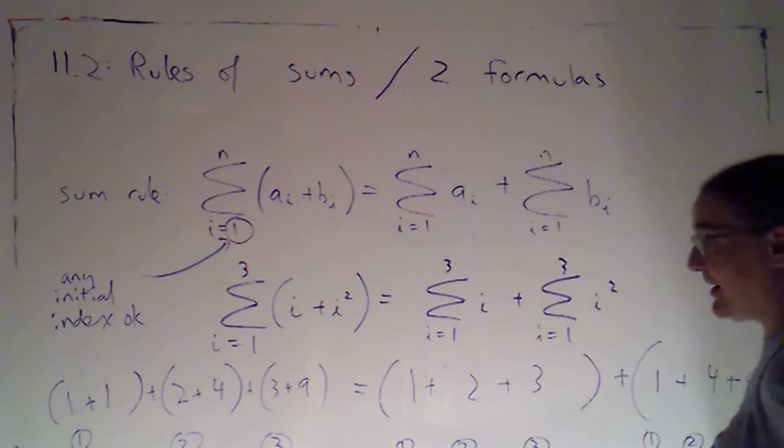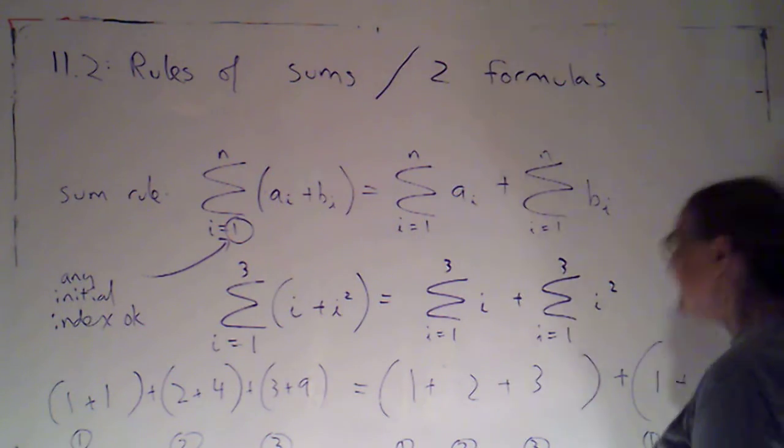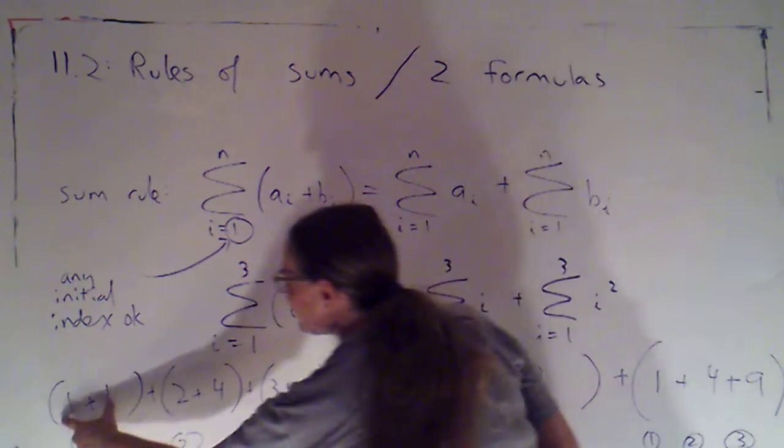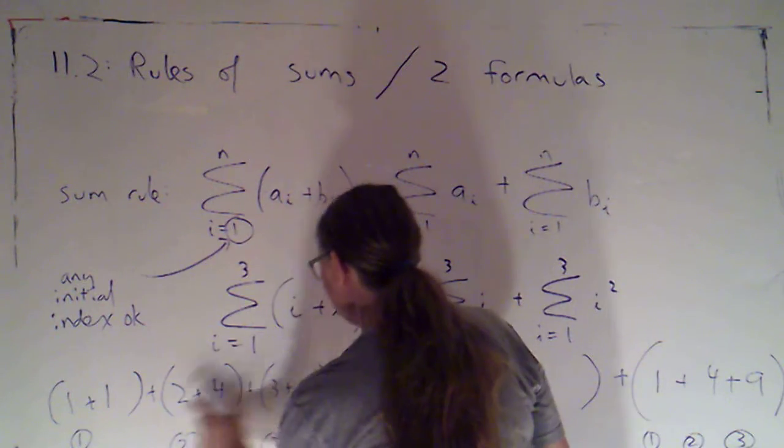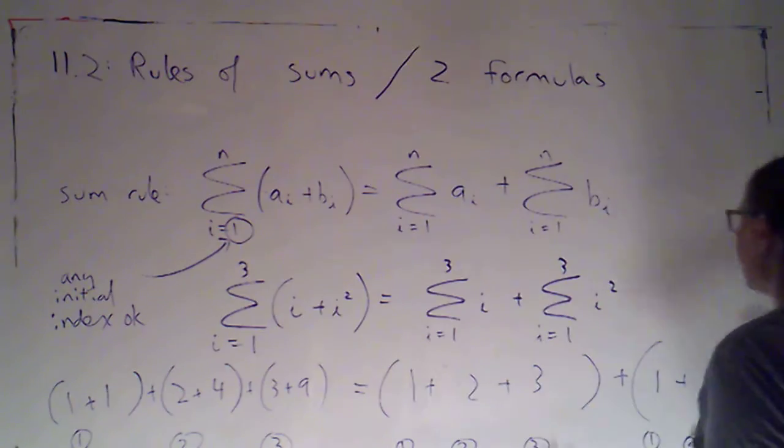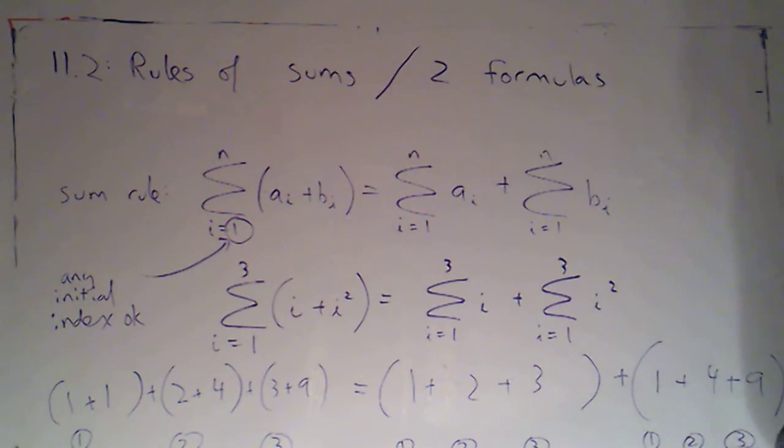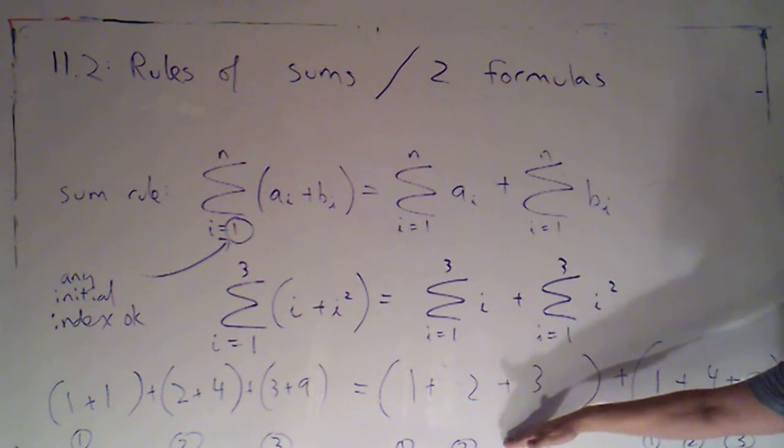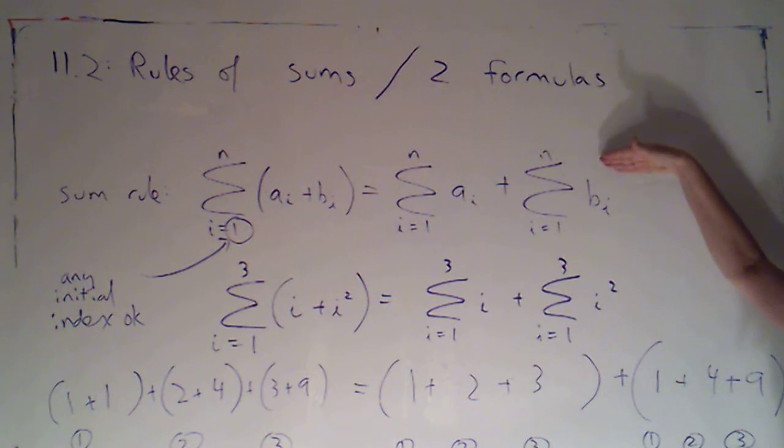Now, if we're actually evaluating this, we would actually have to do the arithmetic. So let's see. That's 2 plus 6 is going to be 8, plus 12, this would be 20. And I should get 20 either way I do it. So this just illustrates why this property works.